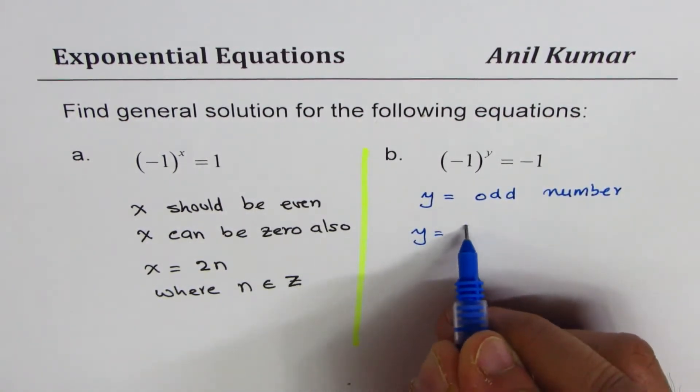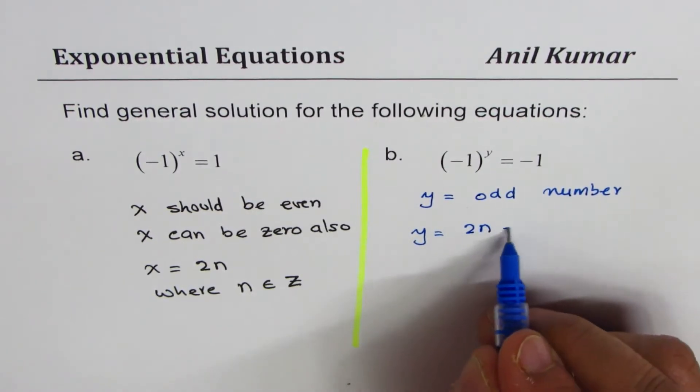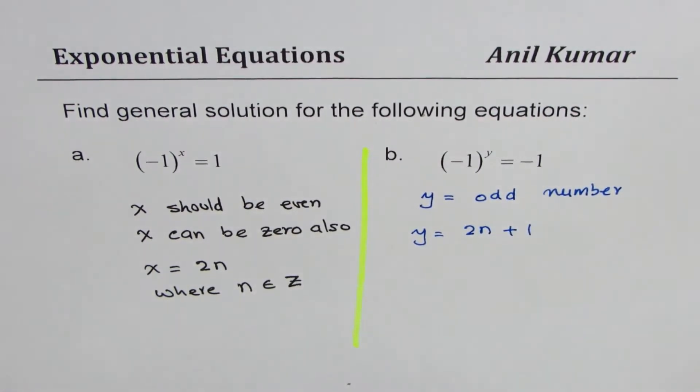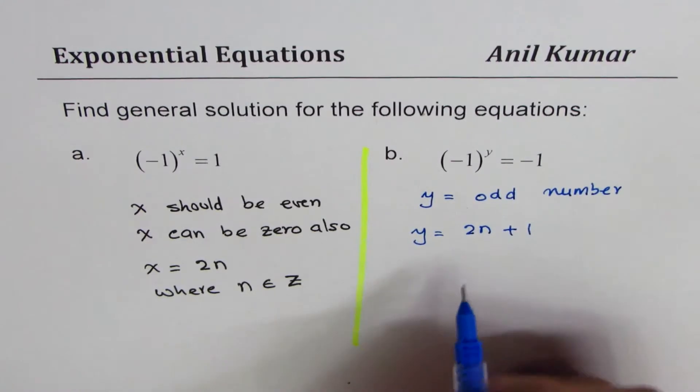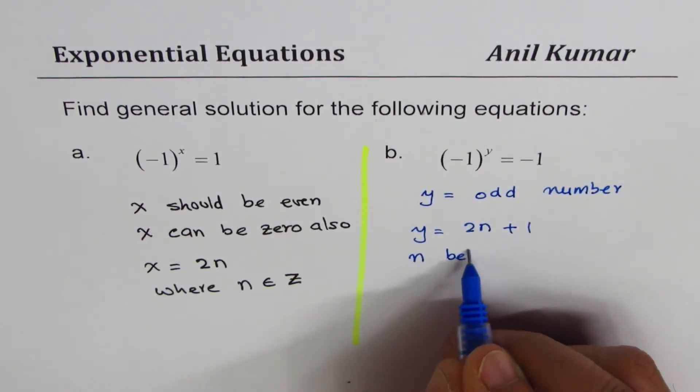y = 2n + 1. So when you do 2n + 1, where n belongs to...